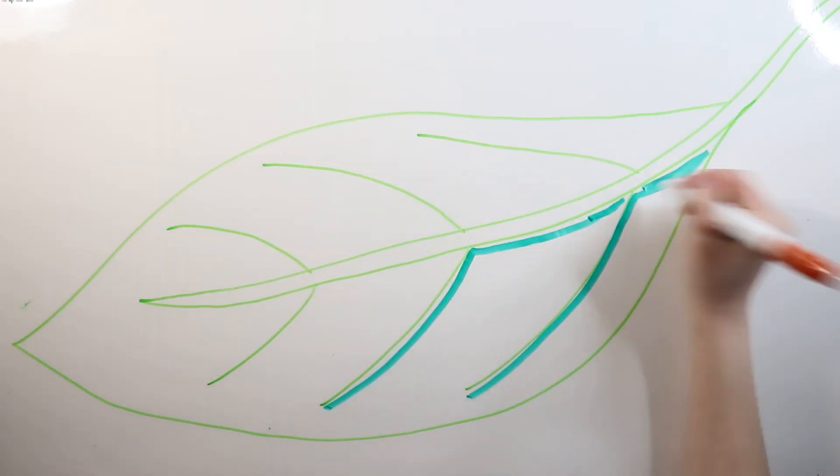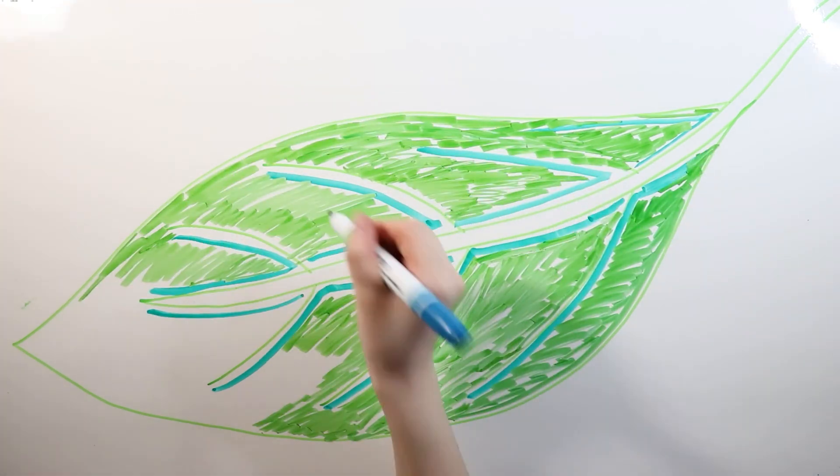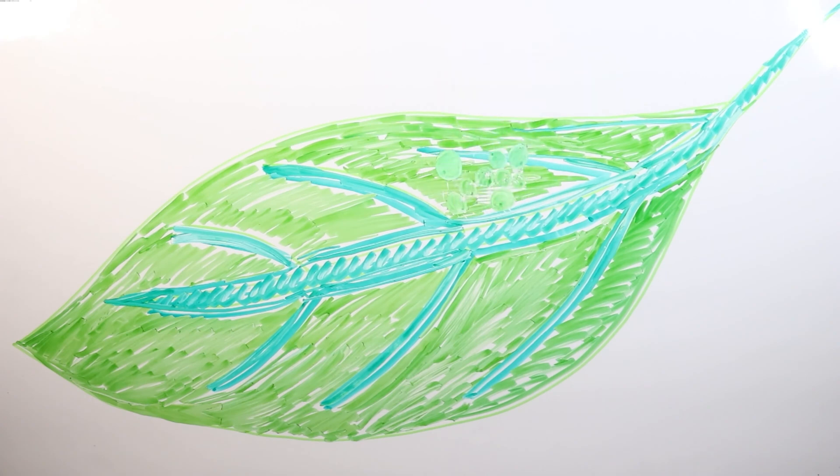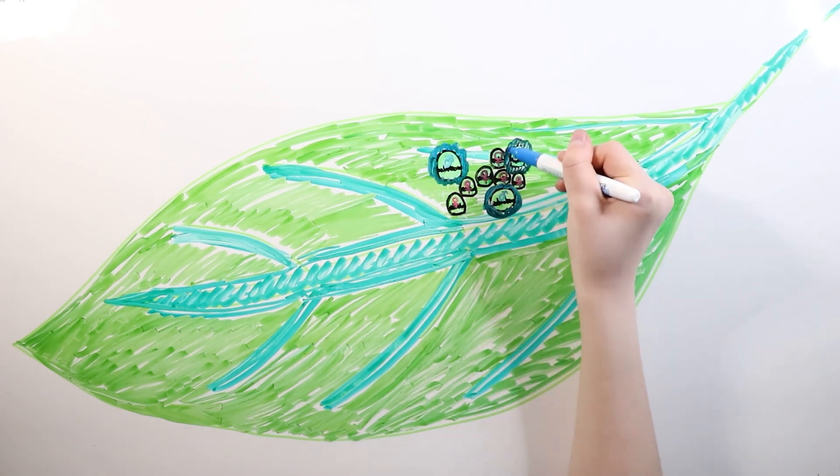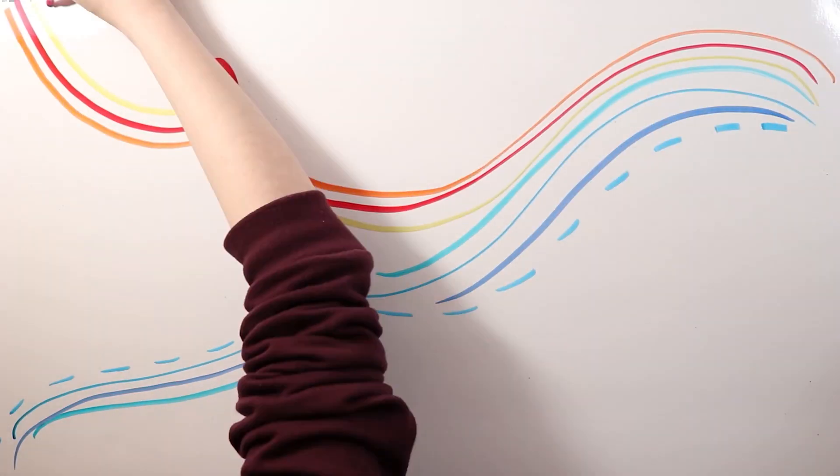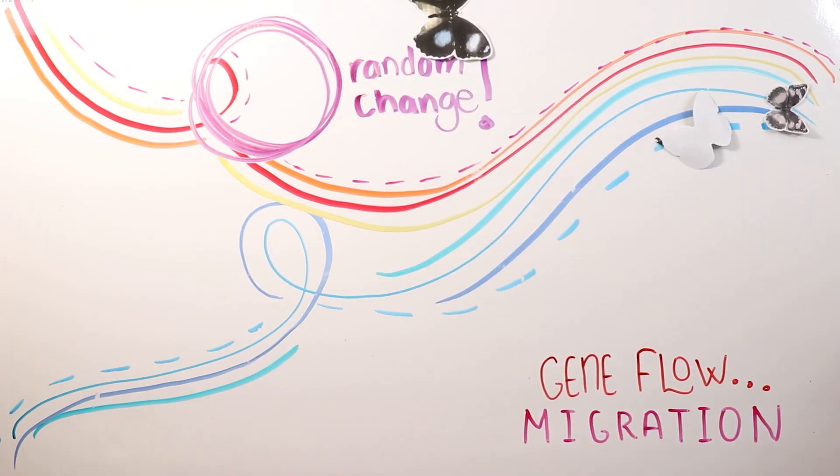As for the gene that combats this deadly bacteria, scientists say that it was introduced to the species by a random mutation, which is beneficial to the butterflies and offers a selective advantage for the species itself. Or, this gene could have been introduced to the population through migration, which is a random change in their mechanism of evolution called gene flow.